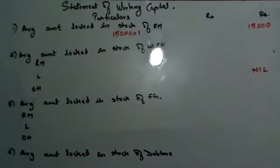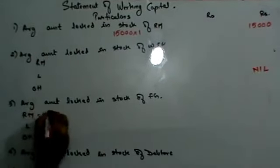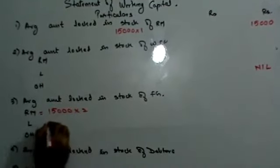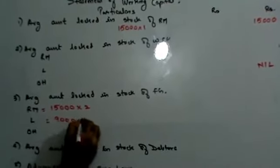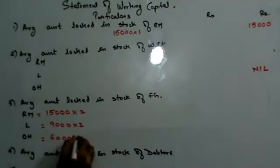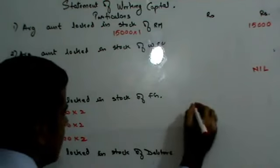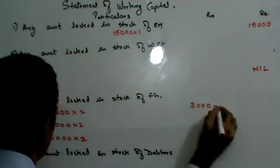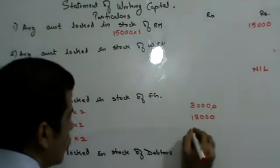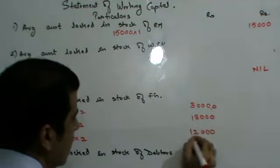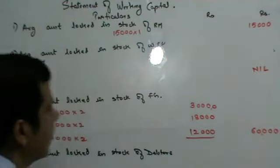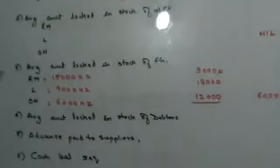Next, finished goods remain in stock for 2 months. So finished goods is 15,000 into 2, 9,000 into 2, 6,000 into 2. So this is going to be 30,000, 18,000 and 12,000. So this comes out to 60,000. Let's move on ahead.